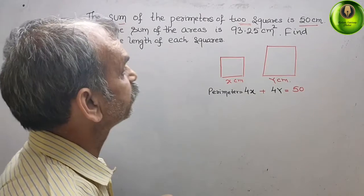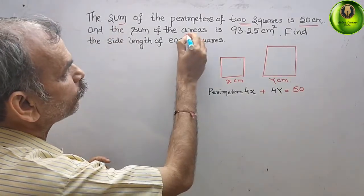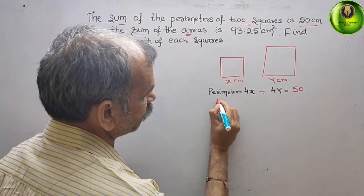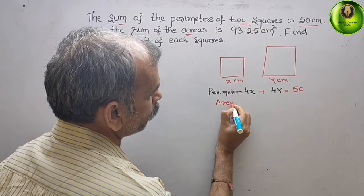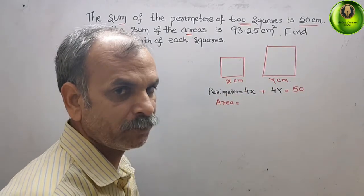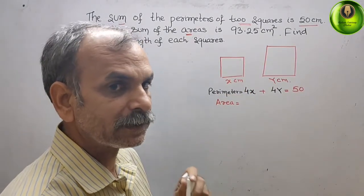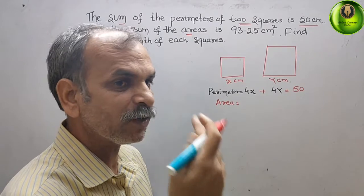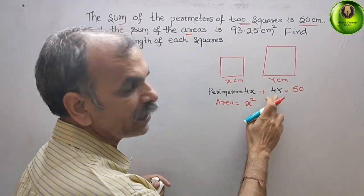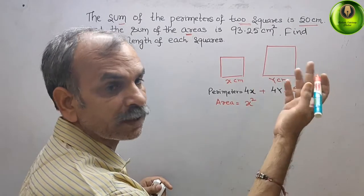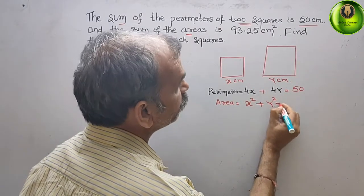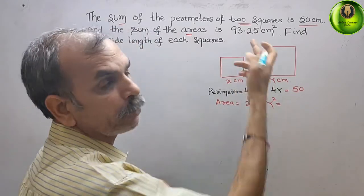Now we will find out the area. They have told the area also. The area of a square is side squared. So for the first square, area is x², and for the second square, it is y². So x² + y² gives you 93.25.